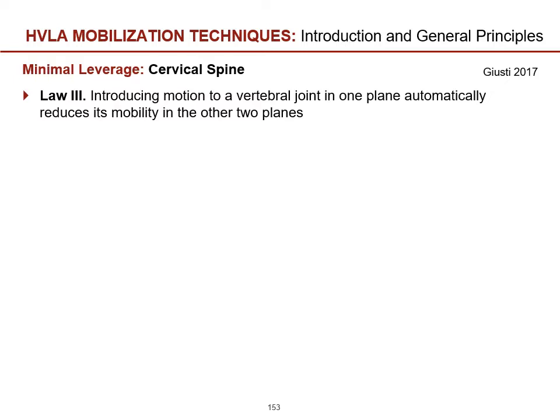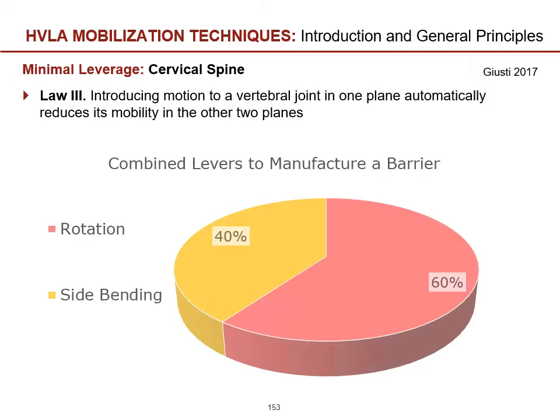Consider Fryette's Third Law: introducing motion to a vertebral joint in one plane automatically reduces its mobility in the other two planes. For instance, if we rotate our head to the right, we will no longer have as much side bending or flexion/extension of the cervical spine as we would with the head in neutral. This is helpful when considering the secondary and even tertiary levers applied to create minimal leveraging positioning.